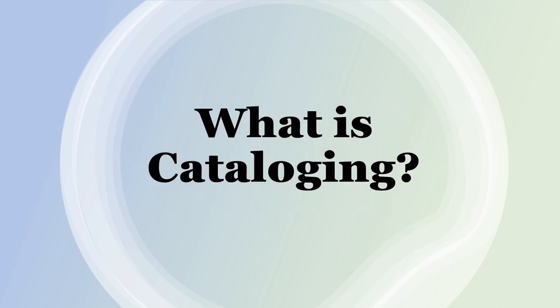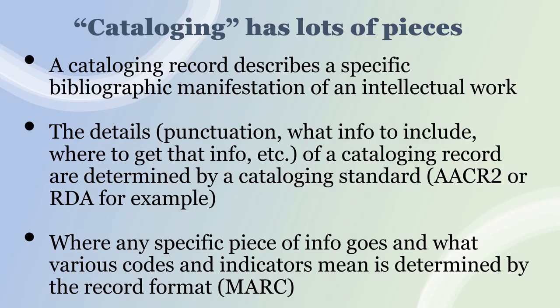So what is cataloging? Cataloging has a lot of different pieces that go into it. A cataloging record describes a specific bibliographic manifestation of an intellectual work — that might be a movie, a book, an issue of a magazine, or any number of things. The details of cataloging, the punctuation, what information you need to include, and where you get that information from are determined by a cataloging standard. AACR2 and RDA are examples of cataloging standards.